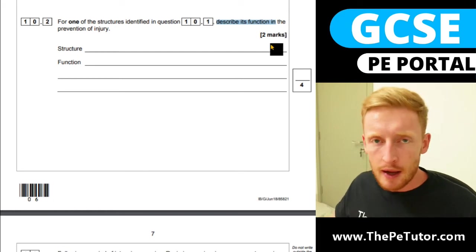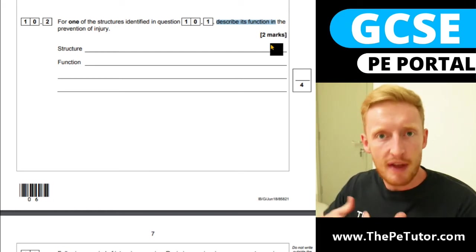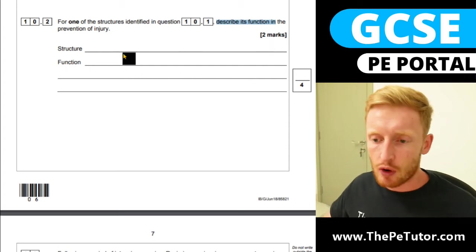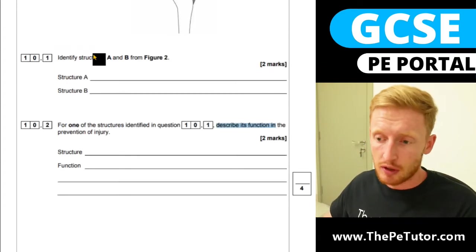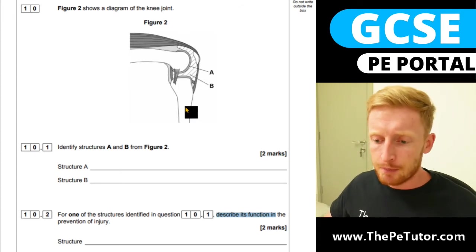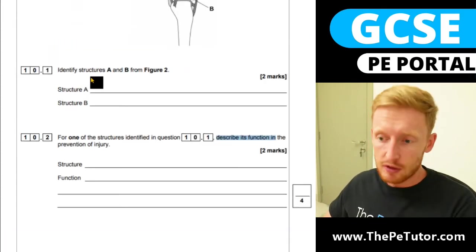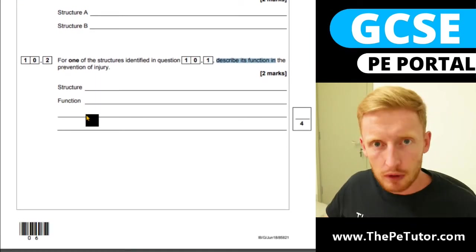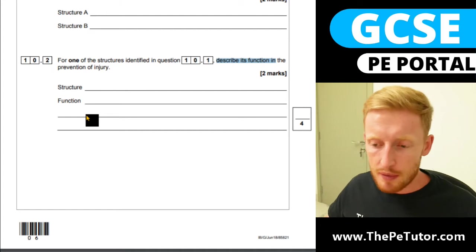What role does it play in helping the performer, helping to prevent injury, helping the smooth running of a joint? In this question they're asking you to pick one of the structures which is labeled above, so A or B, which is our cartilage or synovial fluid, but this could be more absent of the diagram and you might just have to pick one of the structures or a couple of the structures and then describe their function.